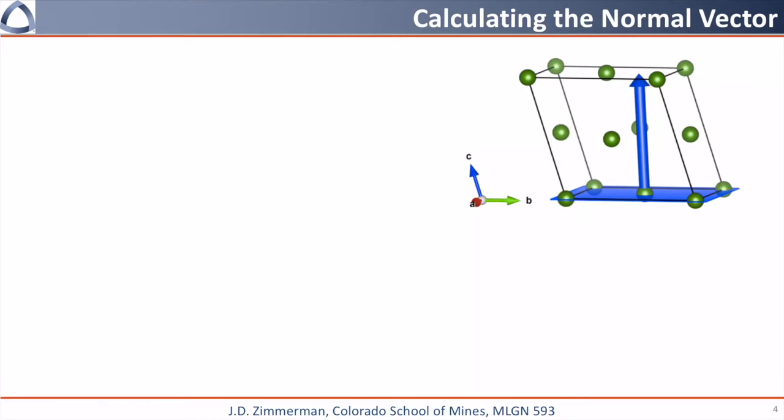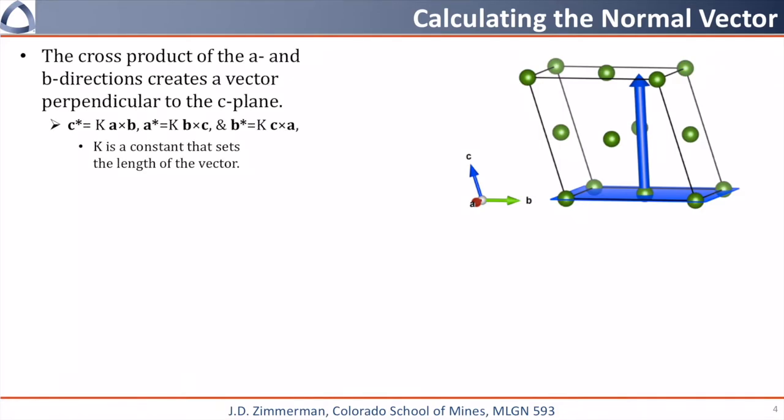Now let's take the triclinic cell that we had in the previous slide, and we're going to try to calculate the normal vector to the blue plane. Luckily, there's an easy way to calculate this normal vector. We know that both the a and the b direction lie in the 001 plane, so if we want a vector normal to the 001, we take the cross product of a and b.